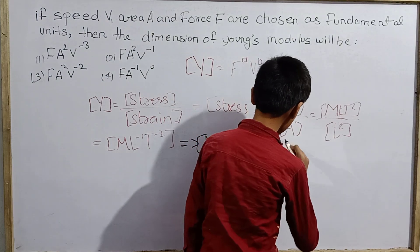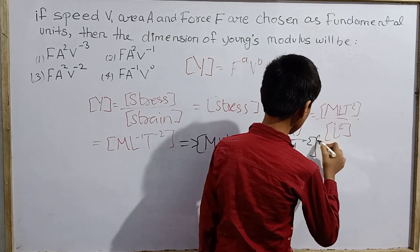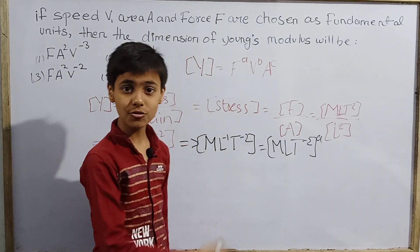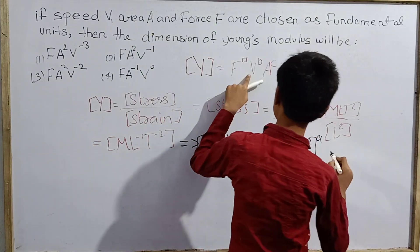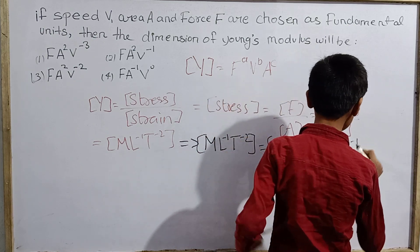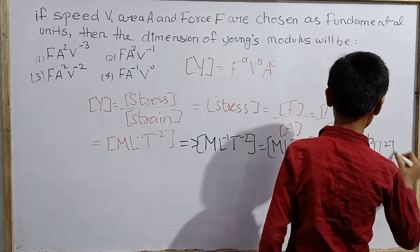F is mine, M L T^-2, but this is not F, this is F^a. So M L T^-2 whole to the power a. This is V, which is speed, that means L T^-1 in the power of b. Area, L^2 in the power of c.